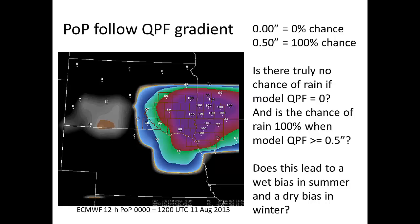What happens then is we SmartTool a POP based on that. This is a 12-hour POP from 0 to 12Z. What you can see is it looks almost exactly like the QPF — not surprisingly. You get this huge area of 100% over Minnesota and South Dakota, and you get a very tight gradient on the north and south side where you go from basically categorical to nothing in a matter of probably 10 or 20 miles. So the question is: is there truly no chance of rain where there's zero QPF? Is that what the model is saying? And conversely, is it truly 100% chance of rain anywhere where the 12-hour QPF is greater than a half inch?